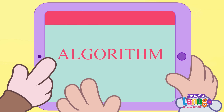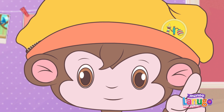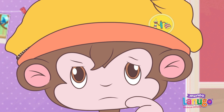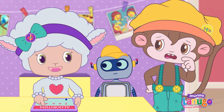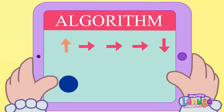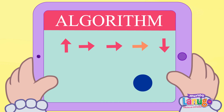I've got it! Algorithms! What's an algorithm? Algorithms are a series of specific instructions that a computer or a robot can follow to accomplish something.